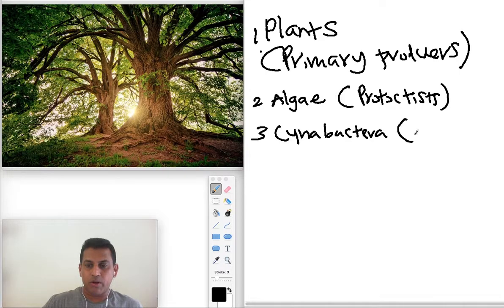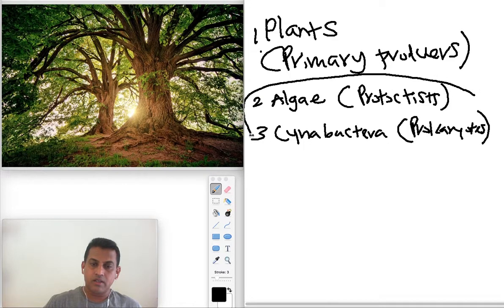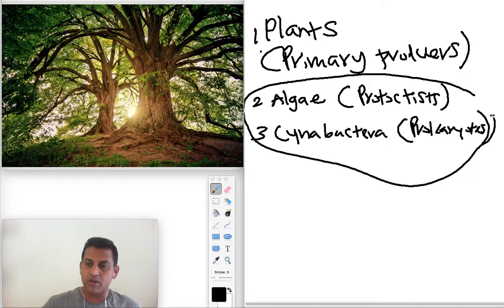That's called cyanobacteria. So that's prokaryotes. They can also do photosynthesis, but their contribution in terms of primary producers is not much significant. Plants are number one.